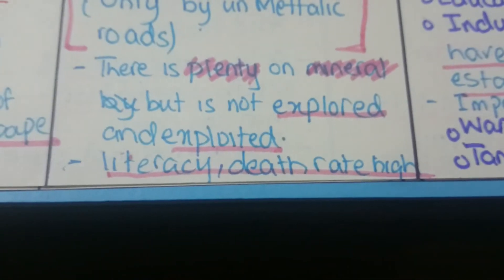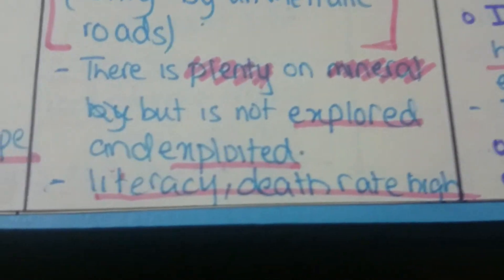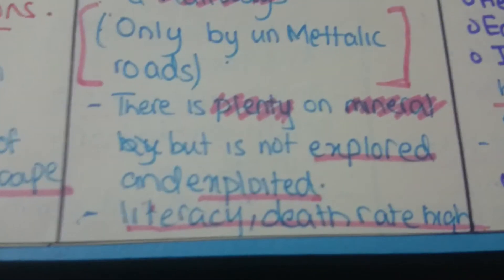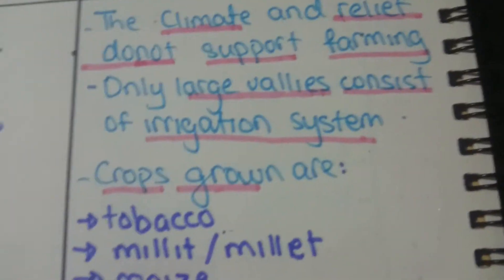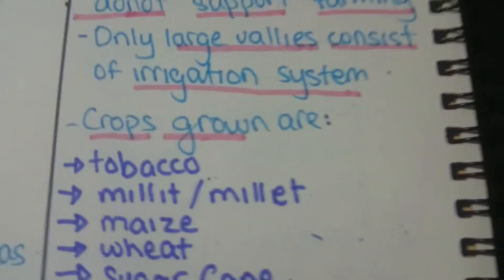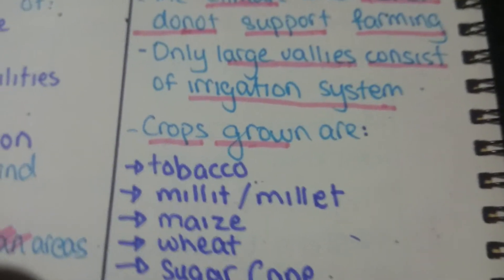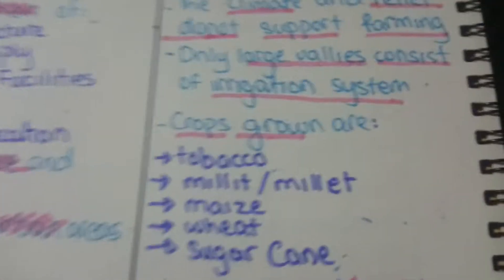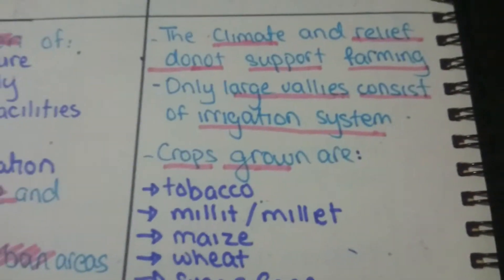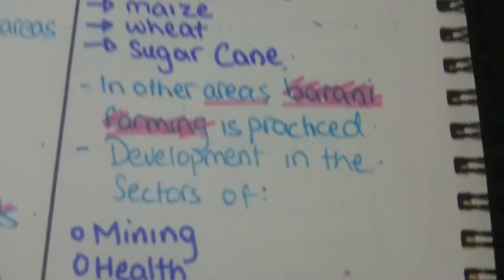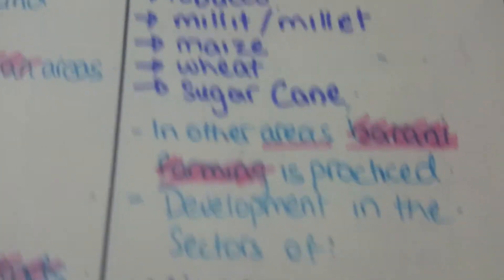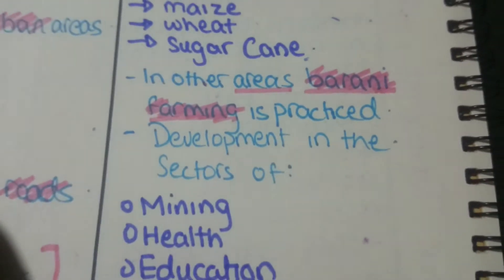There is plenty of mineral wealth but it has not been explored and exploited. The literacy rate is low and the death rate is high. Climate and relief features do not support farming. Only large valleys, such as the Vale of Peshawar, can sustain irrigation systems. Crops grown here are tobacco, millet, maize, wheat, and sugarcane. In other areas, Barani (rainfed) farming is practiced.